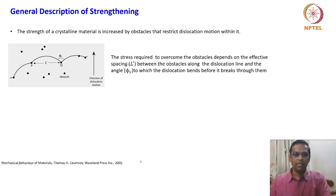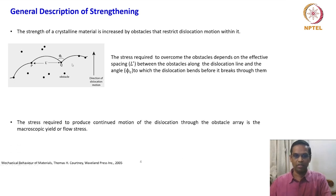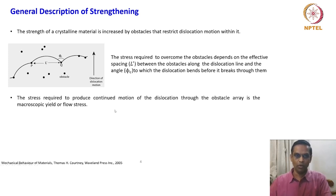The stress required to overcome the obstacles depends on the effective spacing L prime between the obstacles along the dislocation line, and the angle phi_c to which the dislocation bends before it breaks through them. The dislocation line is extruding between two obstacles. The stress required to produce continued motion of the dislocation through the obstacle array is the macroscopic yield or flow stress.